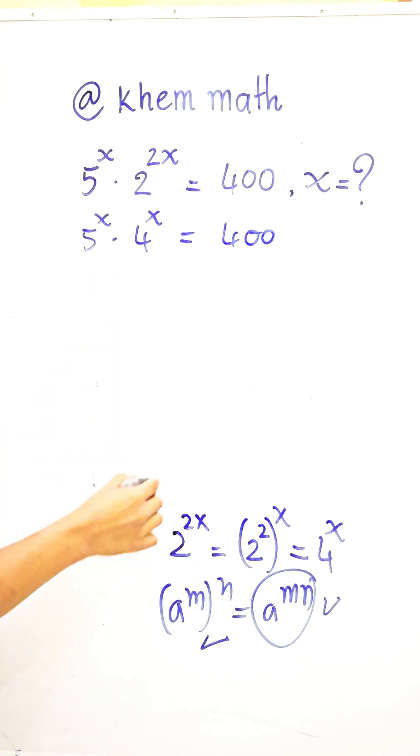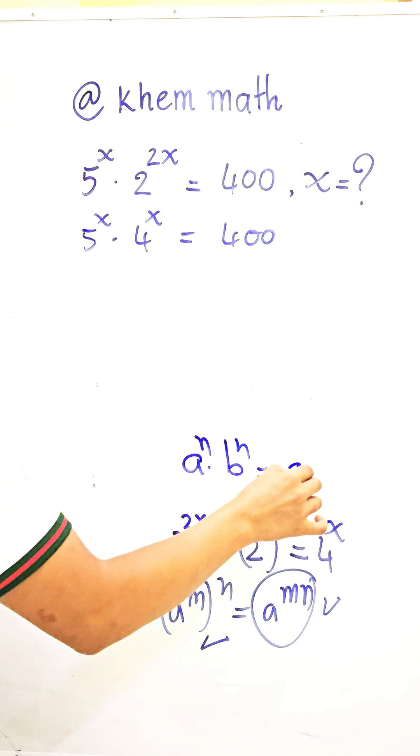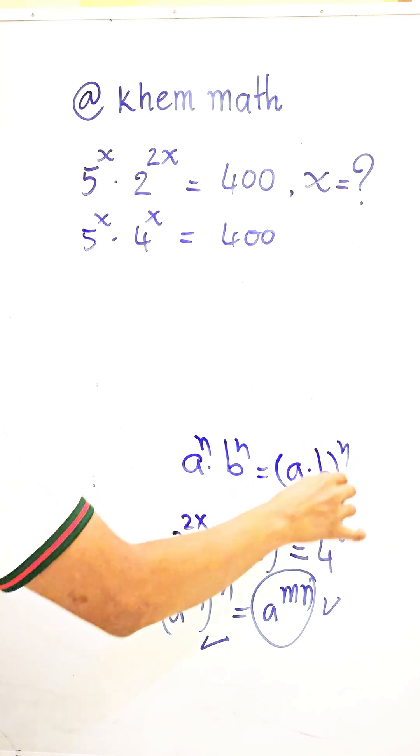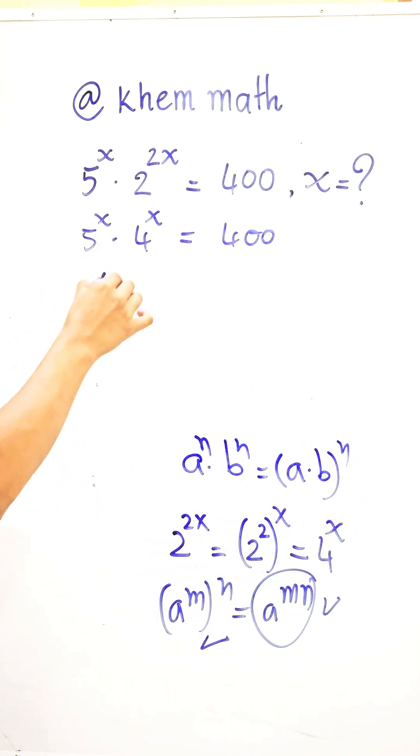And here we use the formula: if a power n times b power n equals a times b all power n. So here we get 5 times 4 all power x. And 400 also can be written as 4 times 100.